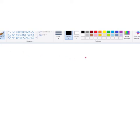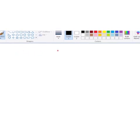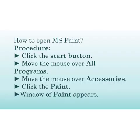Students, you can use different colors — there are many color options available. Now we will learn the steps to open MS Paint. Click the Start button, move the mouse over All Programs, then move the mouse over Accessories, then click Paint. The window of Paint appears and you may draw anything — any picture or any diagram.